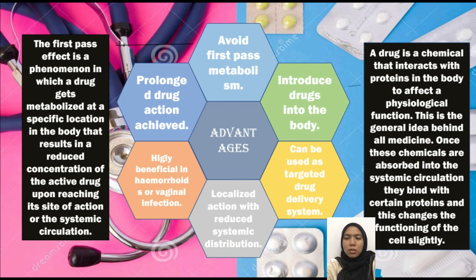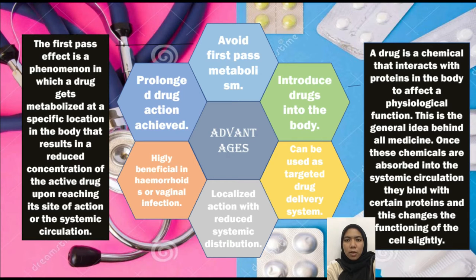The first pass effect is a phenomenon in which a drug gets metabolized at a specific location in the body, resulting in a reduced concentration of the active drug upon reaching its site of action in the systemic circulation. The drug is a chemical that interacts with proteins in the body to affect a physiological function — this is the general idea behind all medicine. Once absorbed into the systemic circulation, these chemicals bind with certain proteins, changing the functioning of the cells slightly.